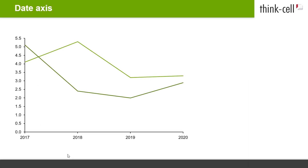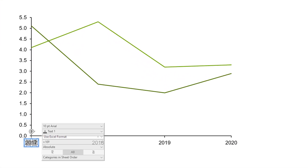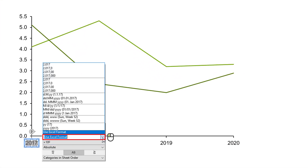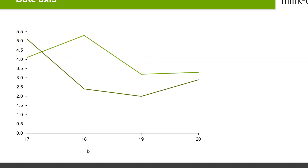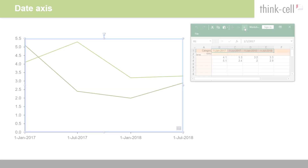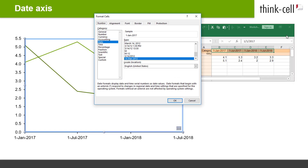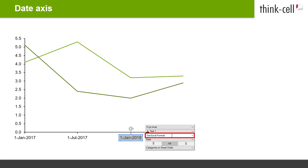Now let's turn to a special type of x-axis: the date axis. Assume that the category row of your datasheet contains strictly increasing year numbers. Left-click into a category label and pick a date format from the control box in the floating toolbar. When you format the labels of your x-axis as dates, the axis turns into a date axis. The same occurs when the Excel cell format is set to Date for all category cells and the category label format in your chart is set to Use Excel format.